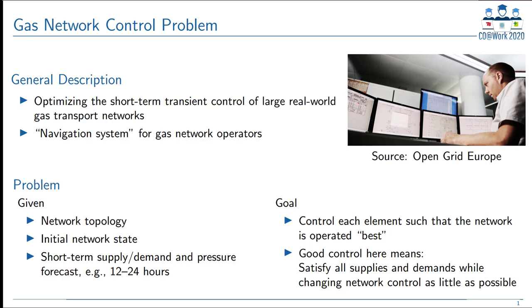As input, we are given the topology of the network together with its initial state in terms of the current flow and pressures. Additionally, we are given a short-term supply and demand forecast for the entries and exits, and for the entries, a pressure forecast for the next 12 to 24 hours. The goal is to find a control for each element over the considered time horizon such that the whole network is operated best — satisfying all given supplies and demands while changing the network control as little as possible.